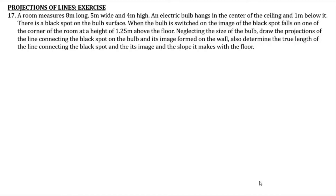We are neglecting the size of the bulb. We have to draw the projections of the line connecting the black spot on the bulb and its image formed on the wall or corner. We also need to determine the true length of the line connecting the black spot and its image, and the slope it makes with the floor.